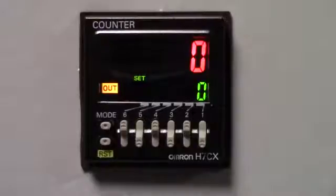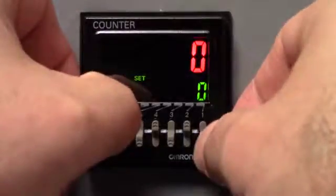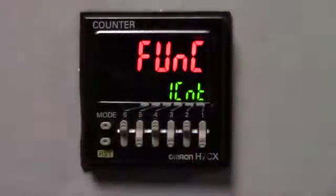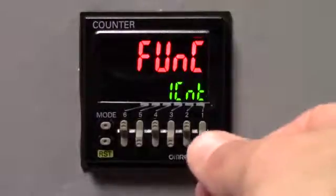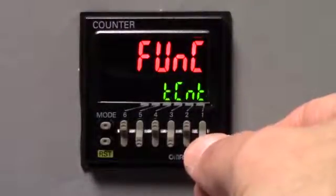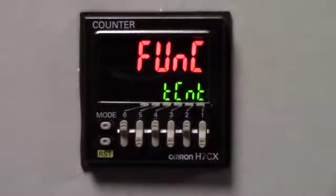That being said, we need to get into the parameter setup, and by doing that, we're going to press the mode key first, and then the number one key. So, that takes us into the parameter setup. You have a one-stage preset, which is the factory default, which we are not going to do. We are actually going to do a total and preset counter. So, we're going to take the number one key, and we're going to toggle it until you have the T-CNT.